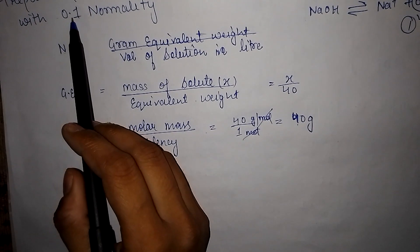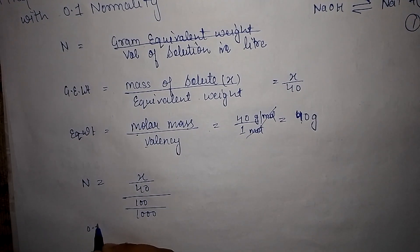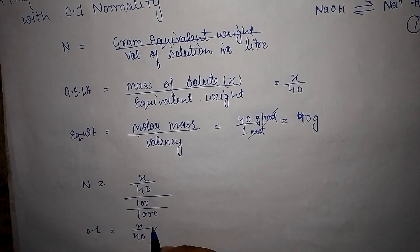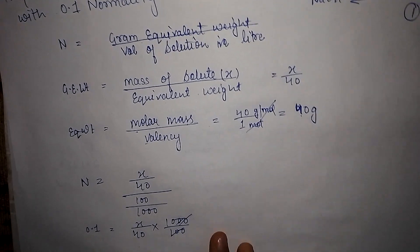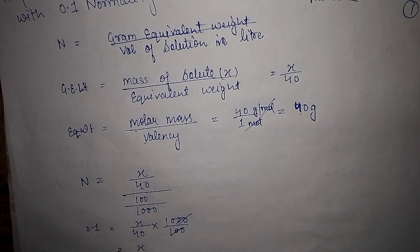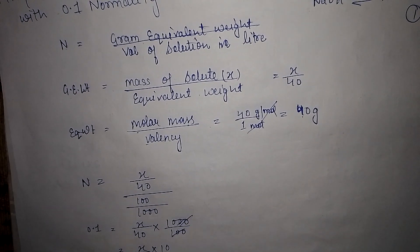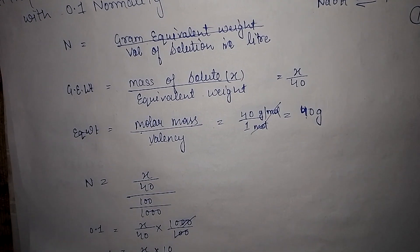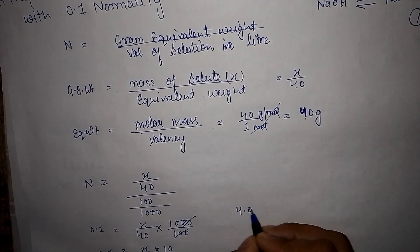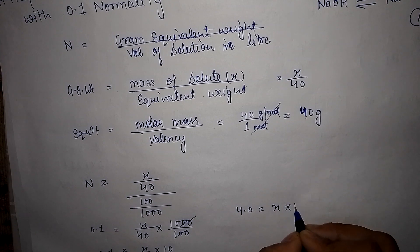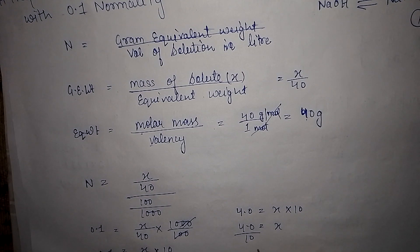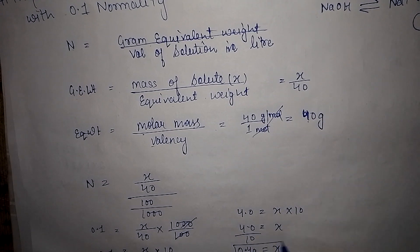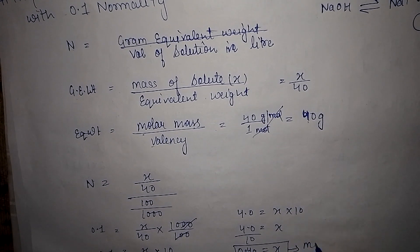The normality we want to prepare is 0.1. So putting in the values: 0.1 equals (x/40) divided by (100/1000). Solving this: x equals 0.1 multiplied by 40 multiplied by 0.1, giving x equal to 0.4 grams. That means the mass of solute required is 0.4 grams.